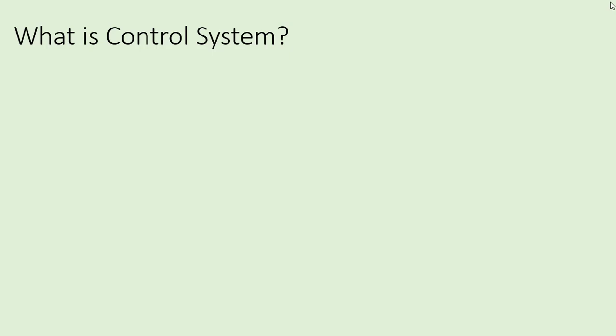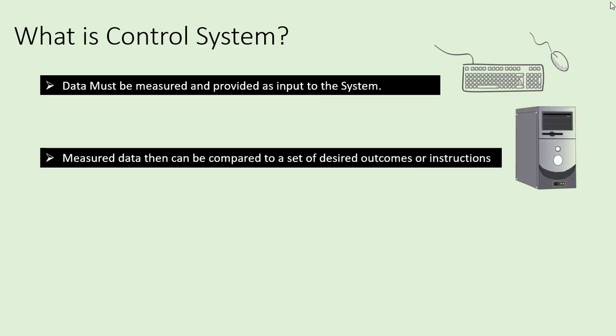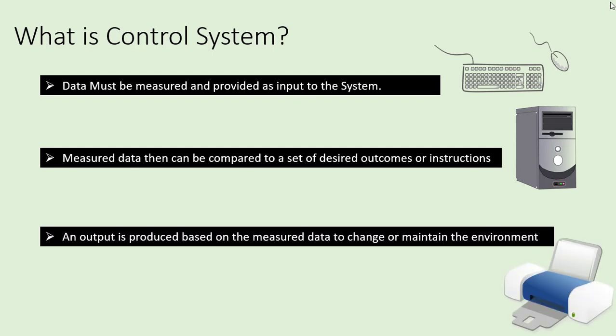Similar to the previous example, any control system must perform three actions to work efficiently: it must measure the data and provide it as input to the system; the measured data shall then be compared to a set of desired outcomes or instructions; and output is produced based on the measured data to change or maintain the environment.